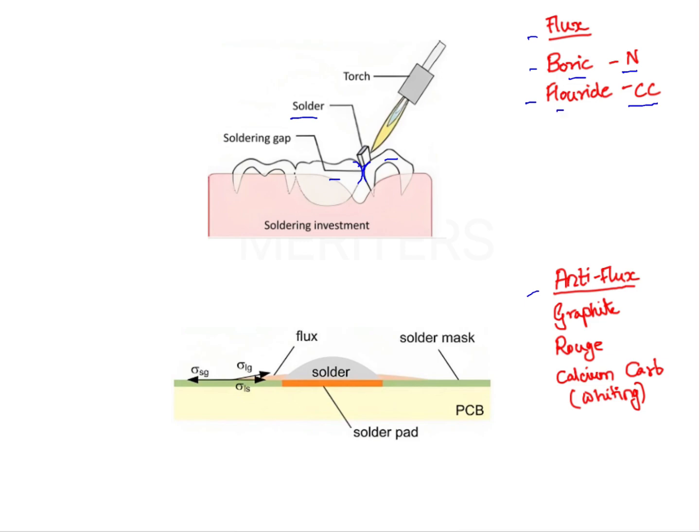Let us see what the anti-flux does. Anti-flux is applied on those areas where you don't want your solder to flow. Basically, if you have the occlusal surface and you don't want the connection to come onto the occlusal surface, you just want your solder to flow in between these two crowns.